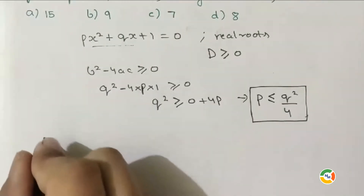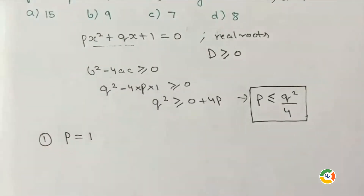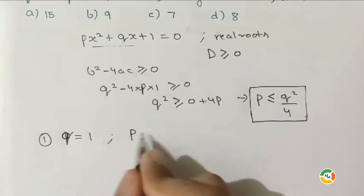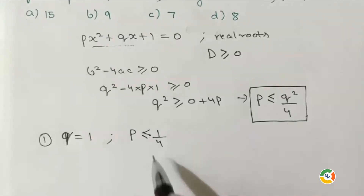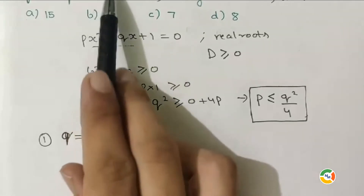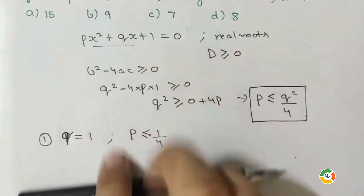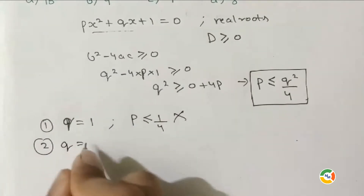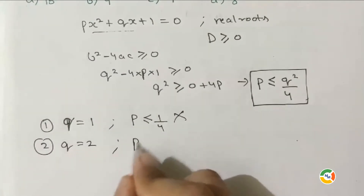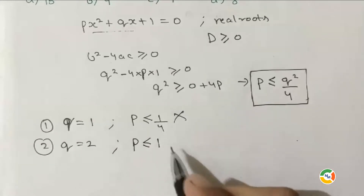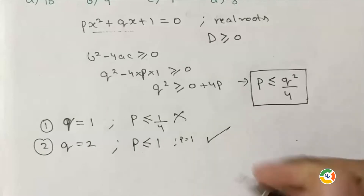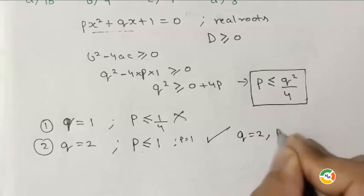First case: if q = 1, then p ≤ 1/4. But p can only be 1, 2, 3, or 4, so this case is not possible. Second case: if q = 2, then p ≤ 4/4 = 1. So p = 1 is the only valid value, giving the pair (p, q) = (1, 2). This case gives one solution.